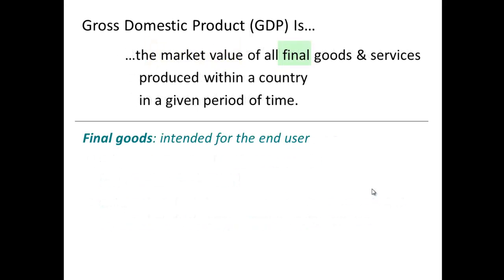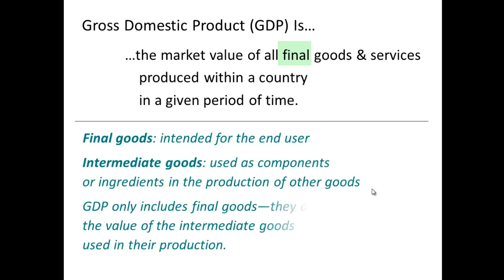The next portion of this definition is the word 'final.' There are two types of goods and services: final goods and intermediate goods. Final goods are the goods that are sold directly to the final consumer. Intermediate goods are goods that are taken by a firm and then combined with other factors of production to produce a different product.